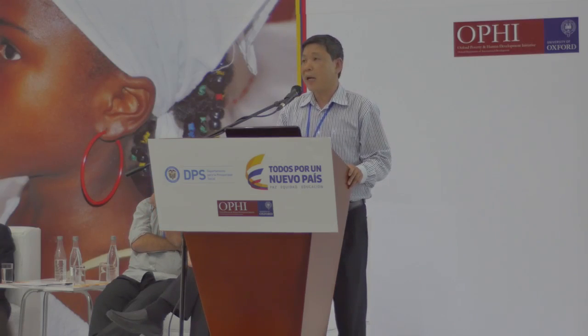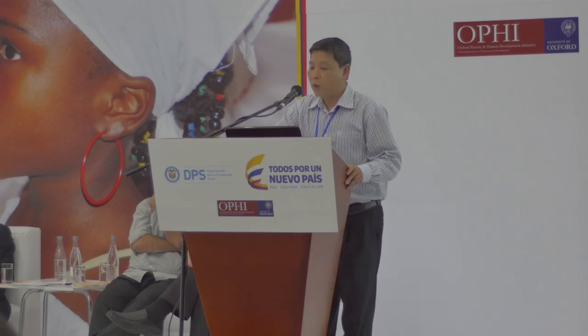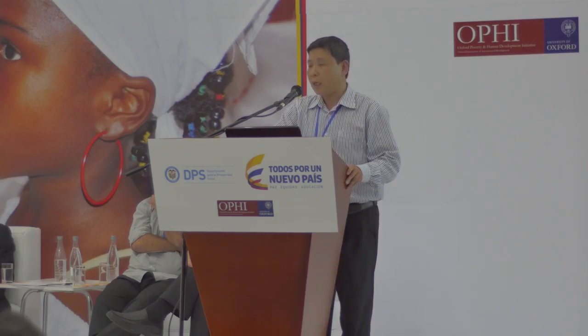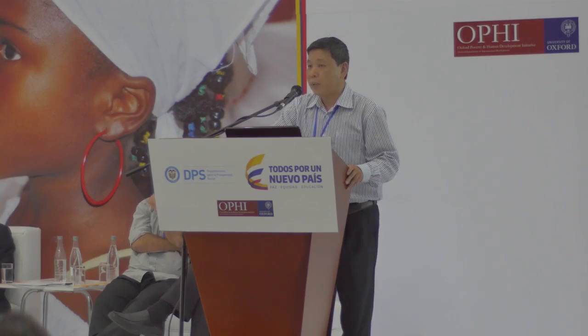For each household class, we have differentiated support policies. For poor households, we provide direct support with the highest priority. For near-poor households, we have similar support but with a lower level of prioritization. For vulnerable households, we have indirect support solutions. For other households, we apply macro-level policies.